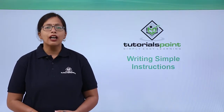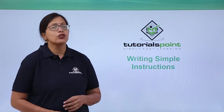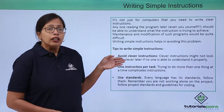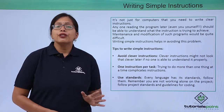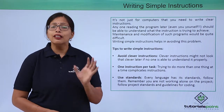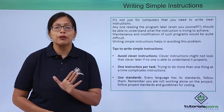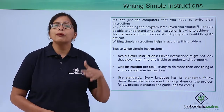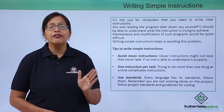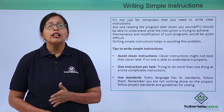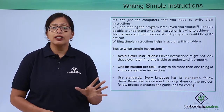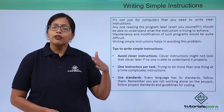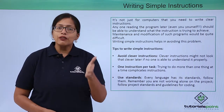In this video we are going to learn how we can write simple instructions for good programming. In our previous video we saw that we should write clear instructions — clear means it should be unambiguous, it should not be vague, and what is the input and what is the output should be very clear. Besides writing clear statements, you should also write simple instructions.